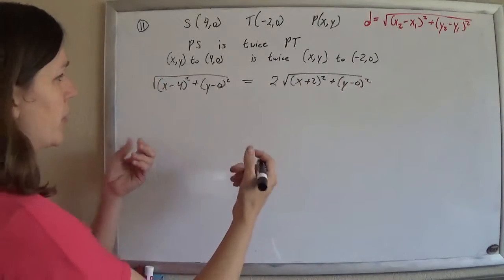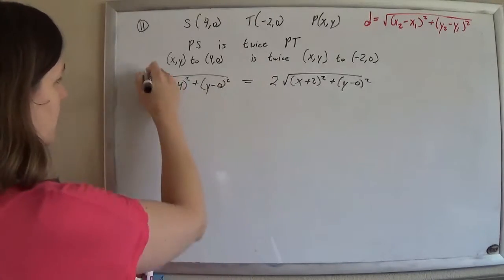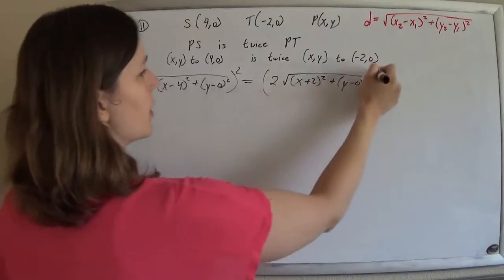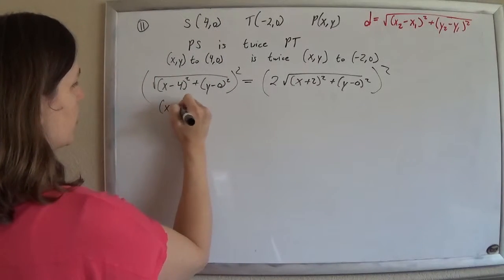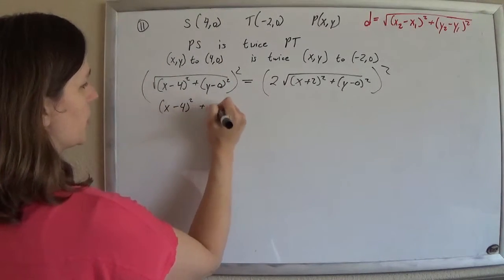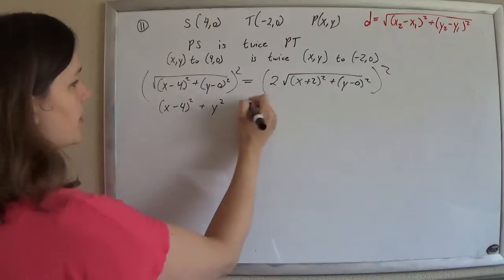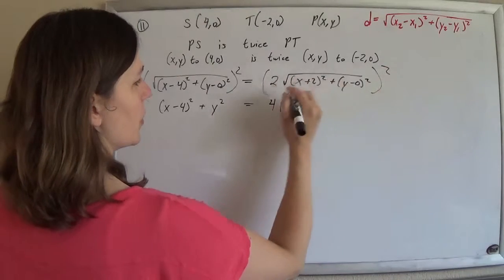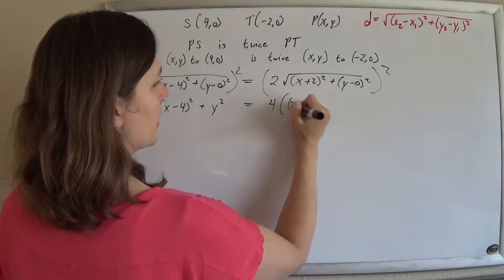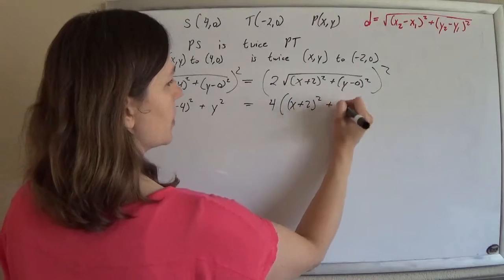And so now, okay, let's make this look familiar. Maybe let's square both sides to see what's happening. So if I square both sides, the square root will come off. I'm just going to write this as y squared instead of (y-0) squared. The 2 gets squared, that's a 4, and the square and the square root will undo each other, so I'm getting (x+2)² plus y².